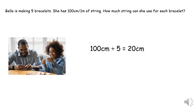100 centimetres and 1 metre are equal. Bella is making 5 bracelets, so I'm going to do 100 centimetres divided by 5, which equals 20 centimetres. So Bella can use a maximum of 20 centimetres for each bracelet, otherwise she won't have enough to make all 5.